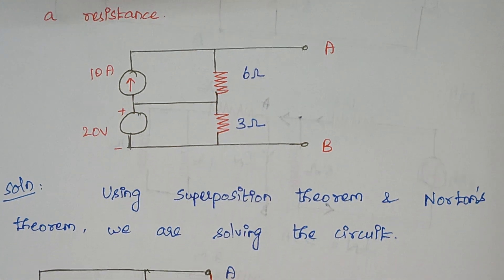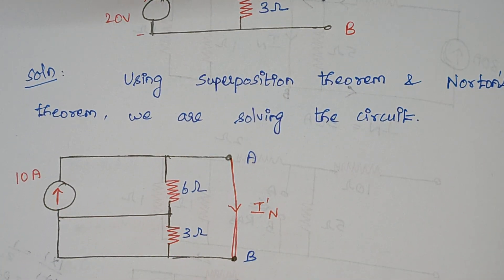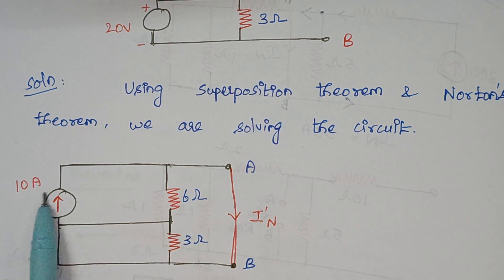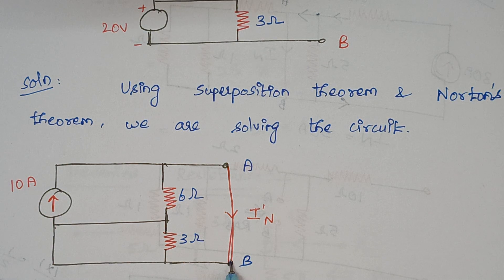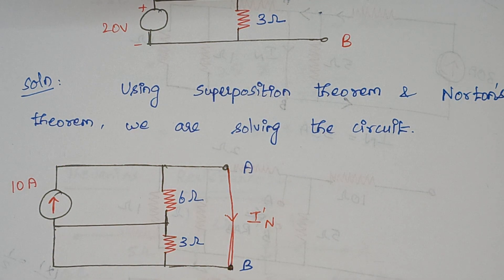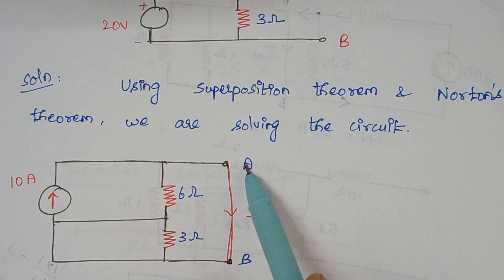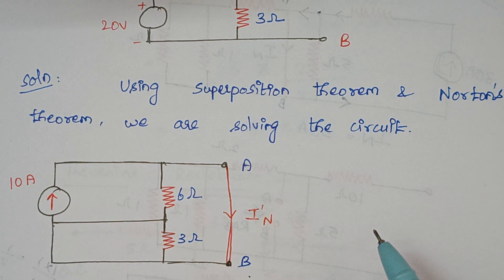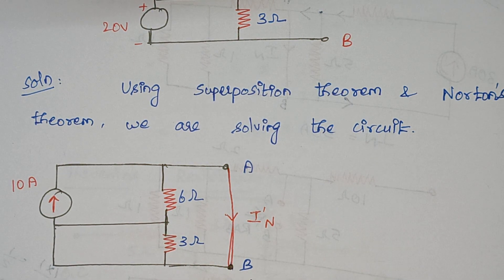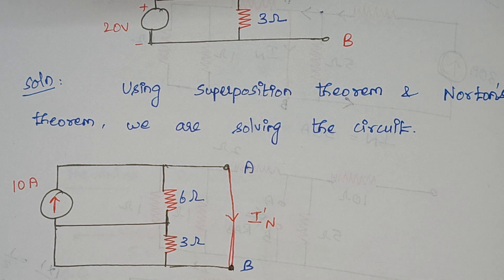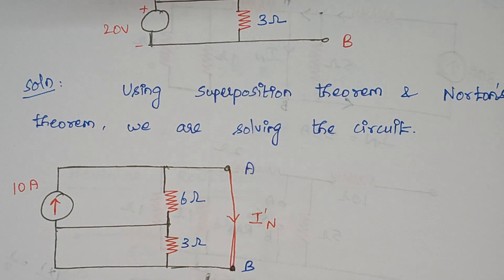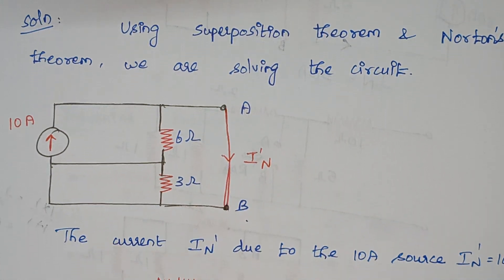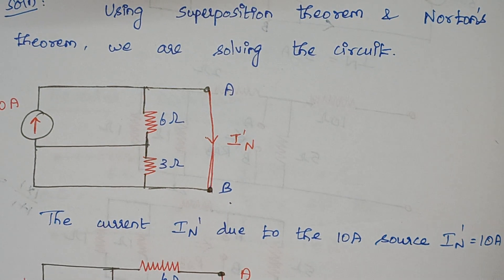First, we are going to consider only one source at a time. Here I am considering only the 10 amp source — I have removed the voltage source — and we short circuit the terminals. Now, what will be the current flowing through terminal AB? Again, the same concept: the current will always flow through the least resistance path. While reaching this junction it won't get divided, and the entire current will flow through this terminal. So the current I'_N is 10 amps.